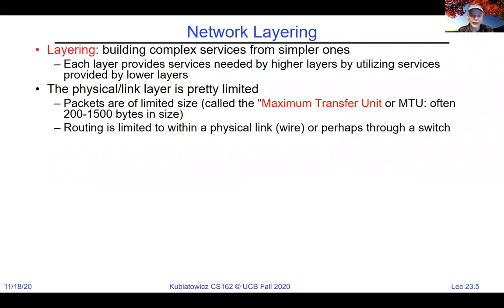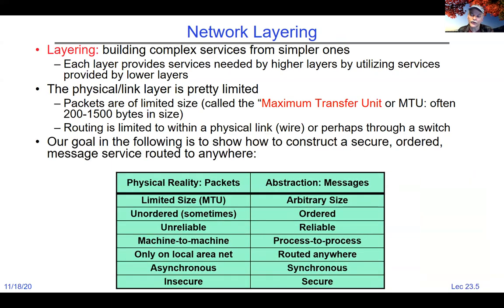The physical link layer is typically very limited: it's one hop, it's unreliable, and there's a maximum transfer unit — somewhere between 200 and 1,500 bytes are very common. It's only high-performance networks inside cloud processing that might have larger packets of around 9,000 bytes. Routing is limited with a physical link, possibly through a switch. What we're going to figure out now is: if we have these limited messages of limited size, how do we build something we can actually use?